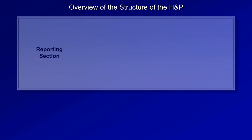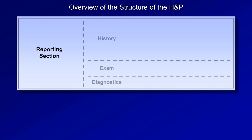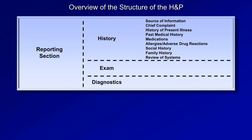The overall structure of the H&P begins with the reporting section, where the presenter or writer conveys factual information as objectively as possible. It's divided into the history, exam, and diagnostics. With the history, there will be some degree of subjectivity, and the clinician will need to selectively filter out irrelevant information. The history is further subdivided into the source of information, chief complaint, history of present illness, past medical history, medications, allergies, and so on.